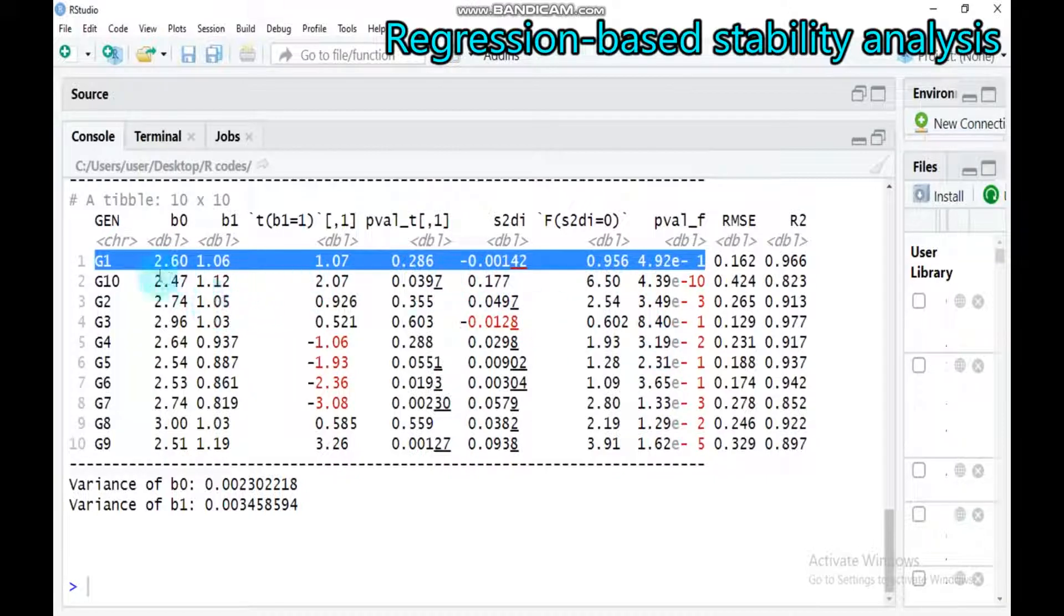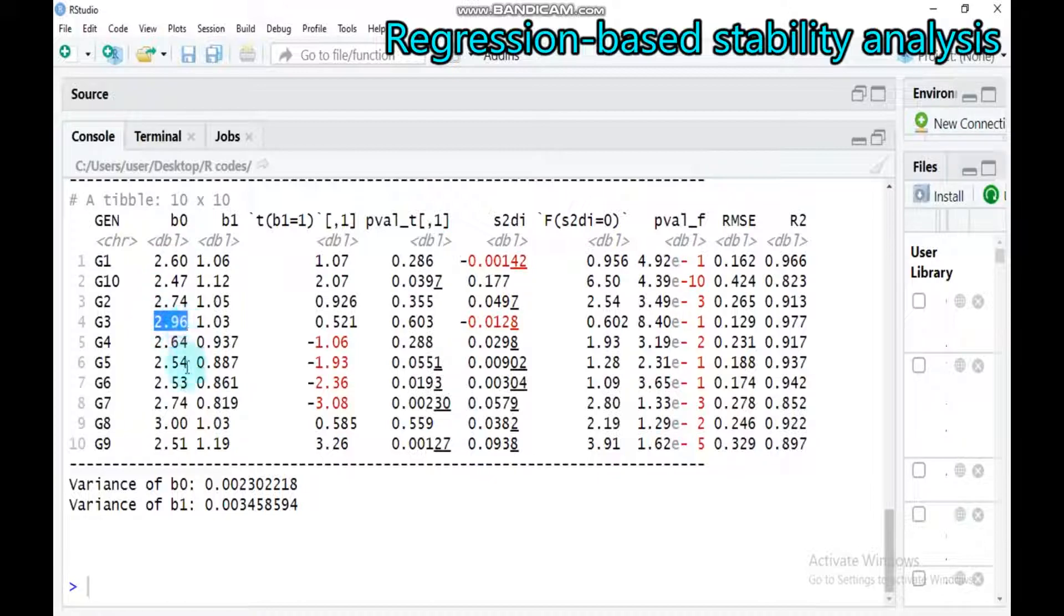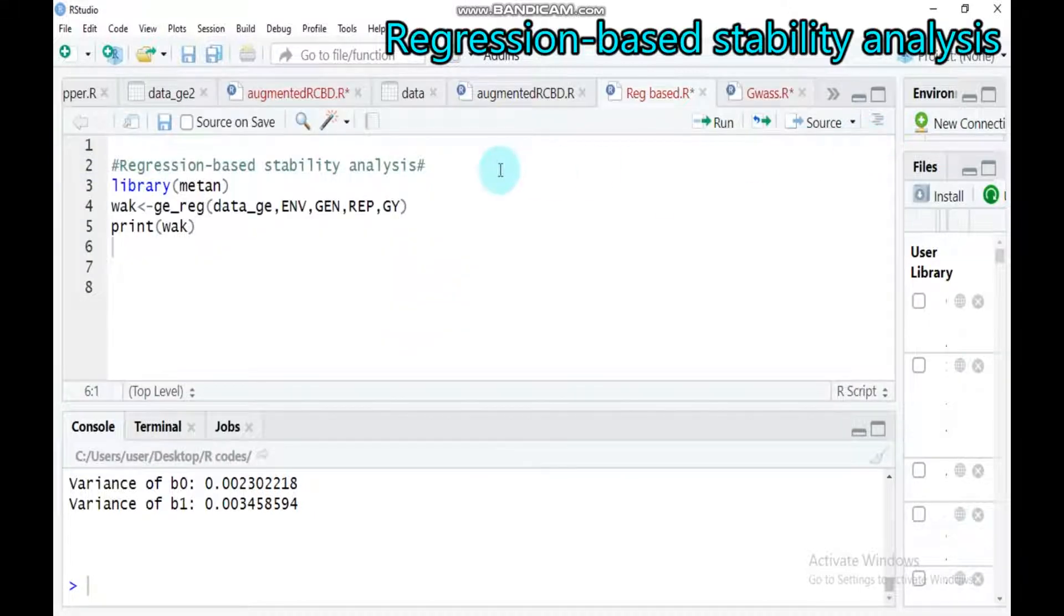By this way, you can consider your stable genotypes. For example, here the mean is around 2.26, and genotype 3 is 2.96, and also 2.54, and here is 2.53. So among these, genotype 3 is superior because the mean value is 2.96. So by this way, you can consider the stable genotype that you are dealing with in your study.